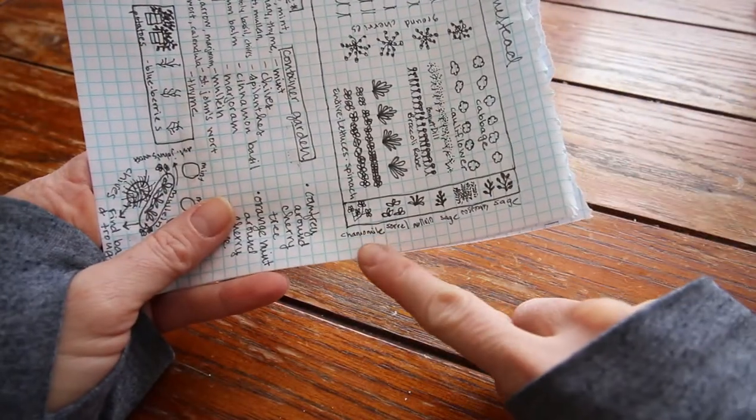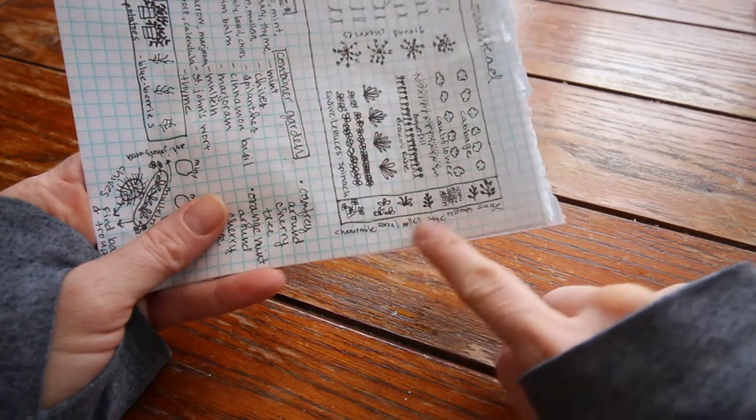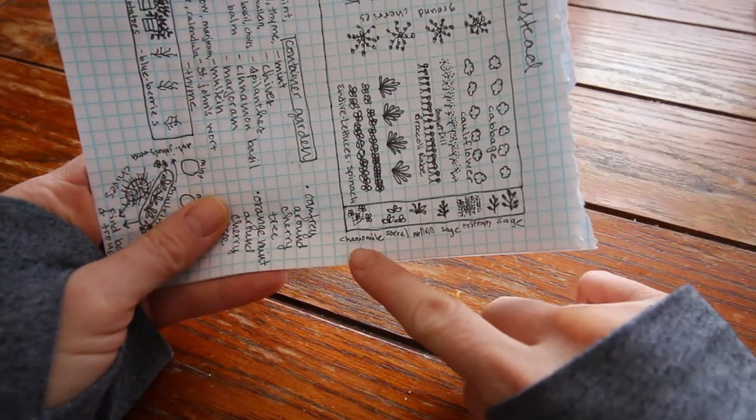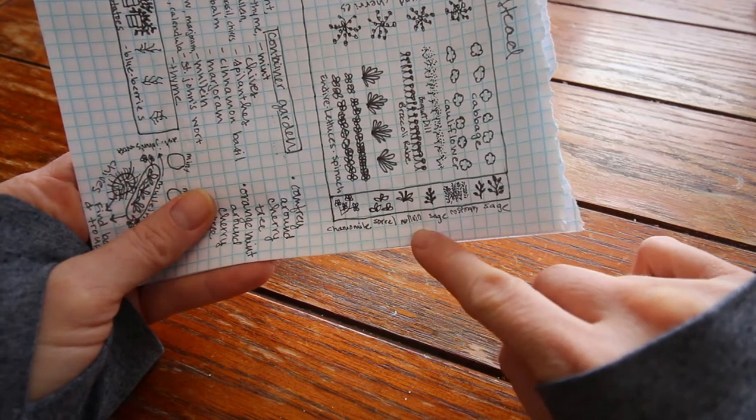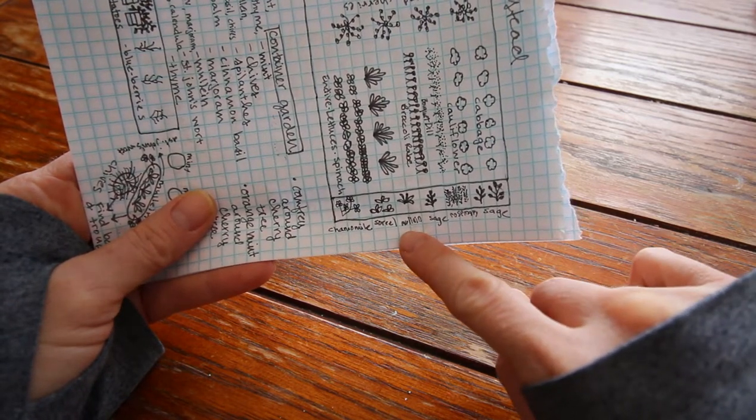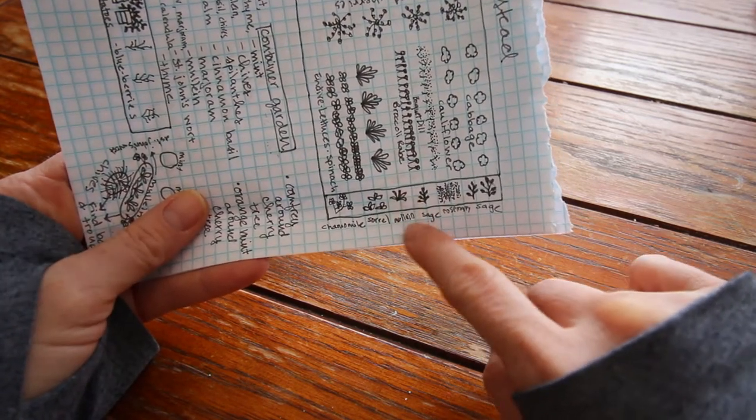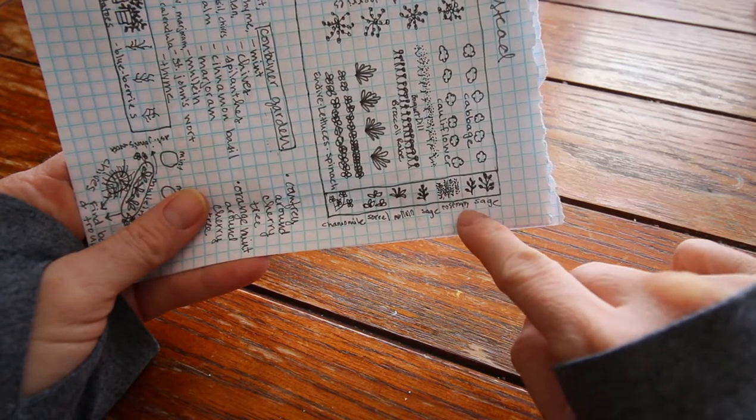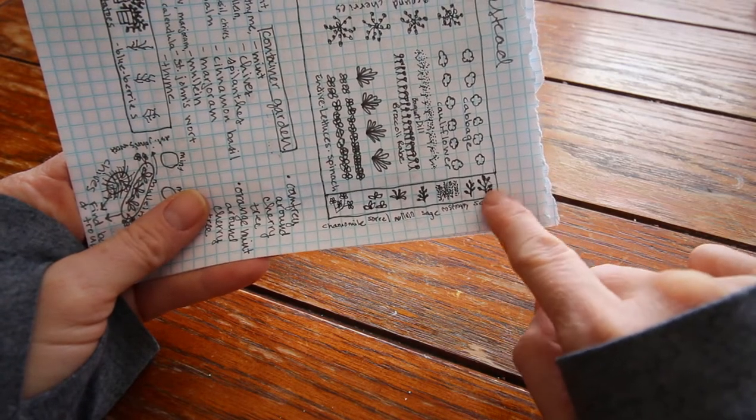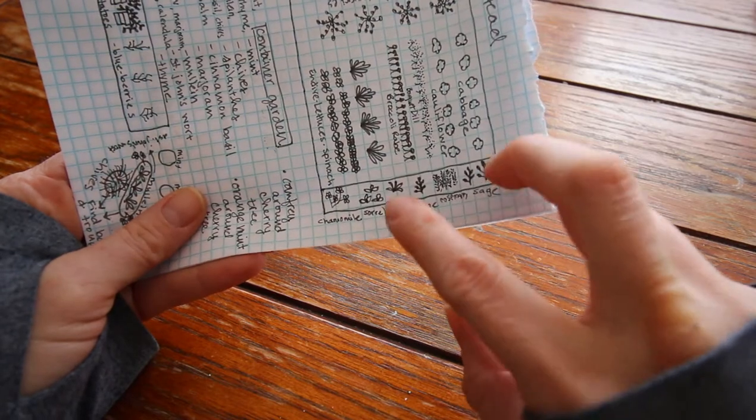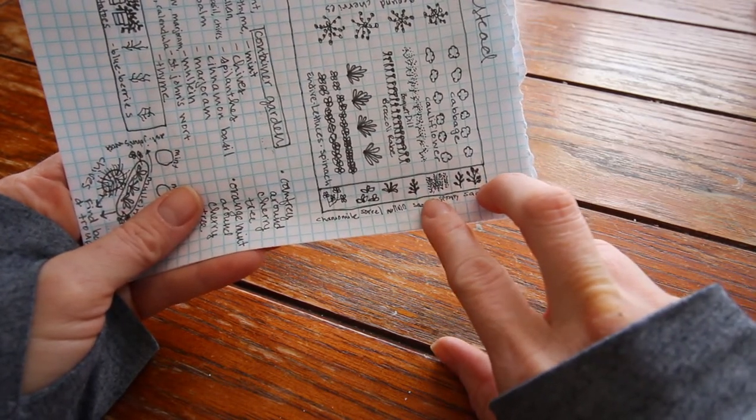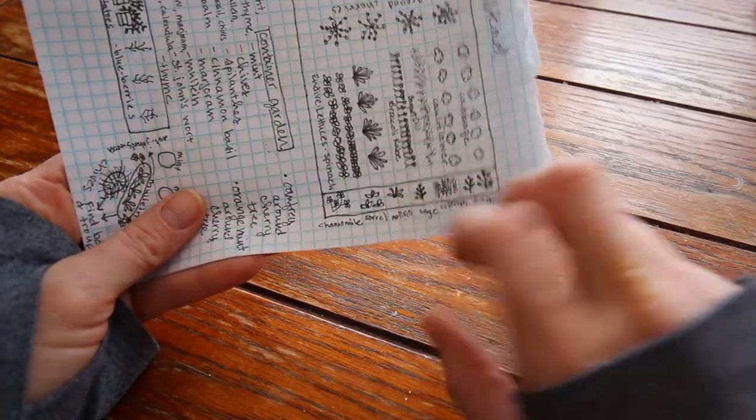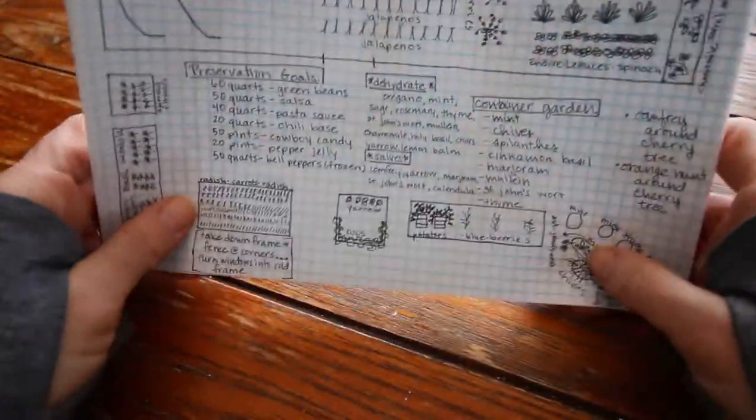This little thing on the side I'm making like my little mini at home perennial garden. This is chamomile that comes up every year, sorrel, mullein, sage, rosemary and more sage. These were there from last year, we'll see if they survived under our massive amounts of snow.